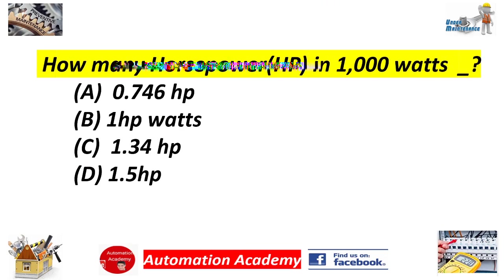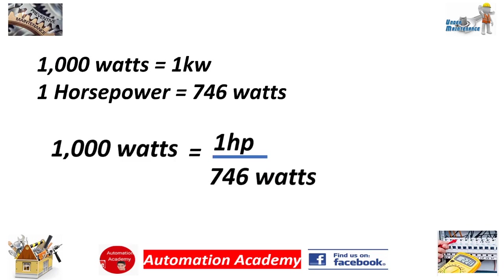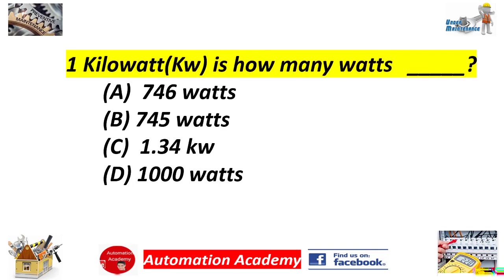Here is the solution: We know that 1,000 watts equals 1 kilowatt, and 1 horsepower equals 746 watts. So 1,000 watts divided by 746 equals 1.34 horsepower. Next: 1 kilowatt is how many watts? Answer: D. 1,000 watts.